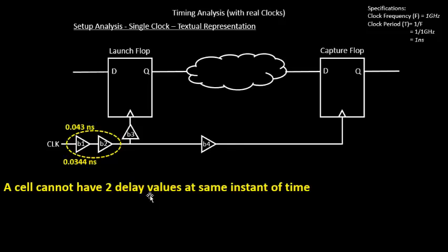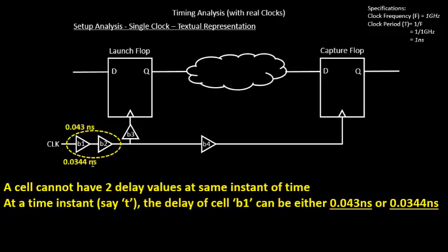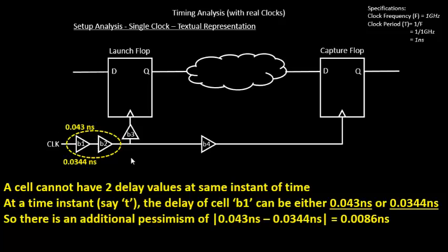The conclusion is that a cell cannot have two delay values at the same time instant t — it can have either 43 ps or 34 ps. For the common path, b1 and b2 can't have two different delays simultaneously. So in the launch and capture clock path calculations, we must use either 43 ps or 34 ps for b1, but not both. The extra pessimism added is 43 ps minus 34 ps, which is 8.6 picoseconds.